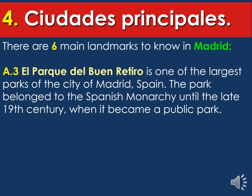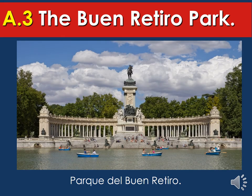The next landmark is El Parque del Buen Retiro, Buen Retiro Park — one of the largest parks in the city of Madrid. The park once belonged to the Spanish monarchy until the late 19th century when it became a public park. It has a lake where people use boats for kayaking, and people also like to have picnics there. It's a really popular park in España, and it's now only open to the public — it no longer belongs to the monarchy.